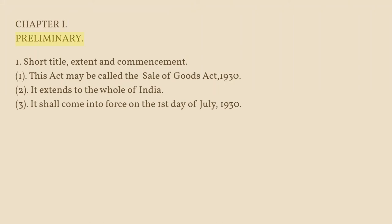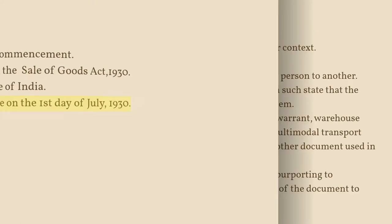Chapter I: Preliminary. 1. Short Title, Extent and Commencement. (1) This Act may be called the Sale of Goods Act, 1930. (2) It extends to the whole of India. (3) It shall come into force on the first day of July, 1930.